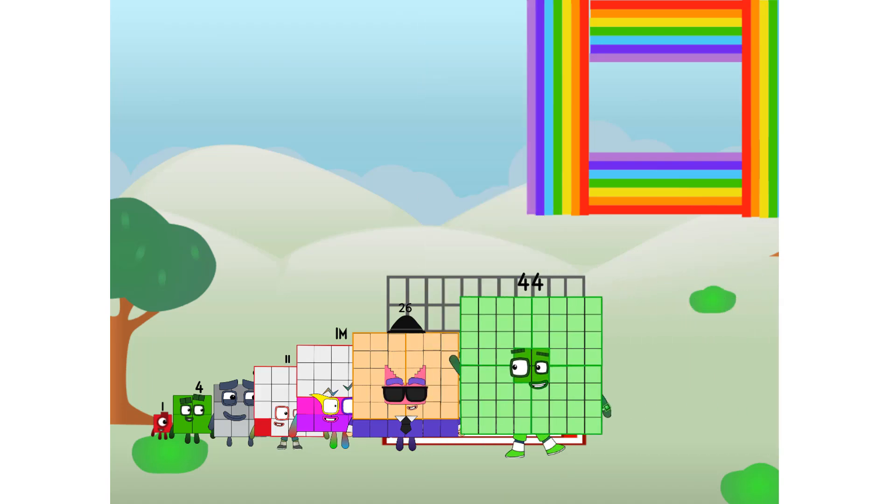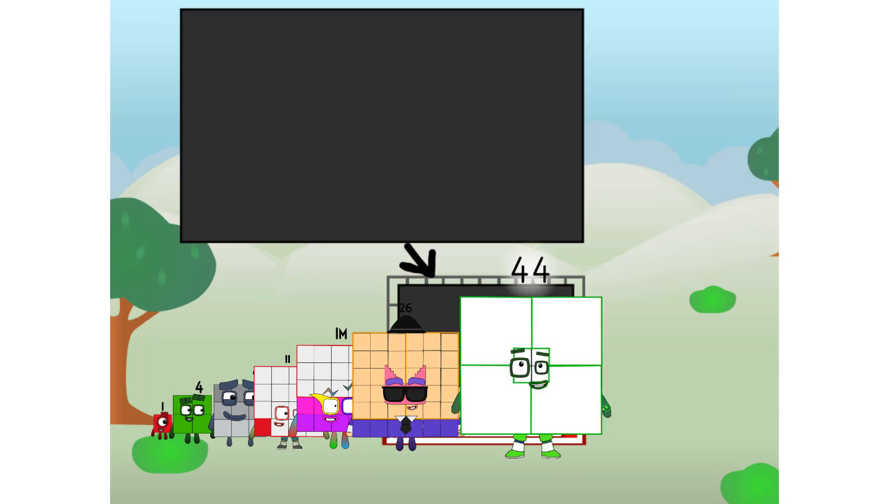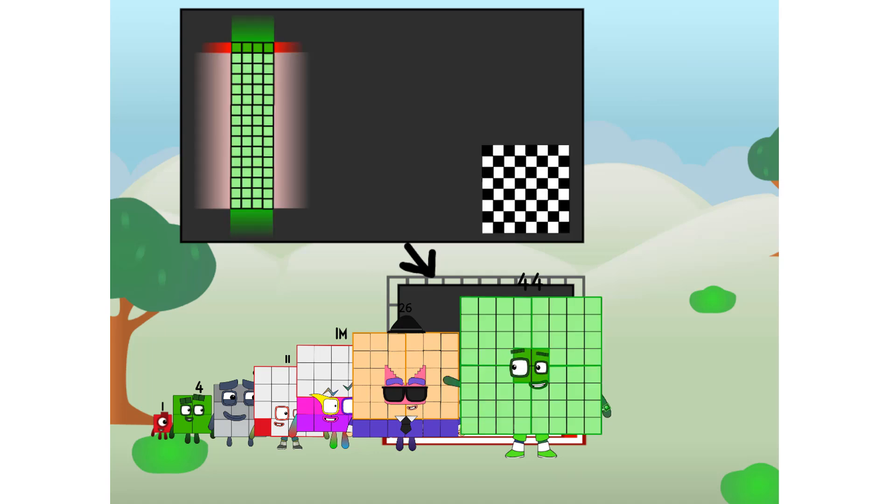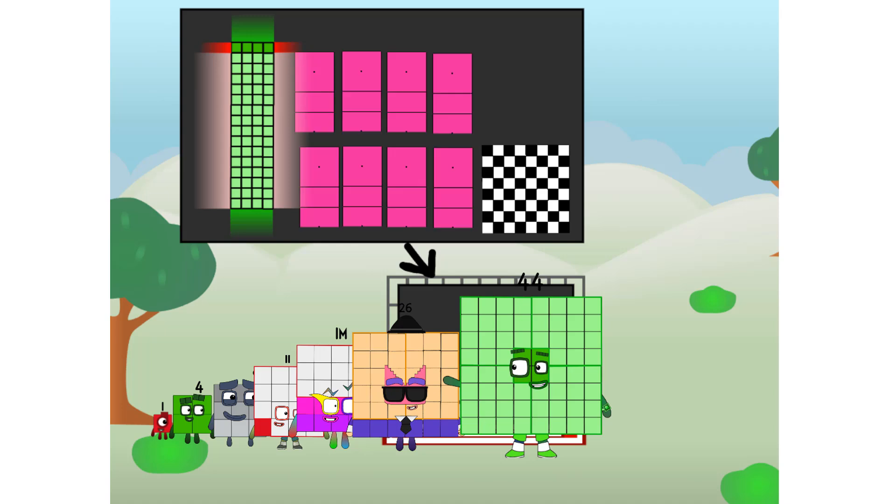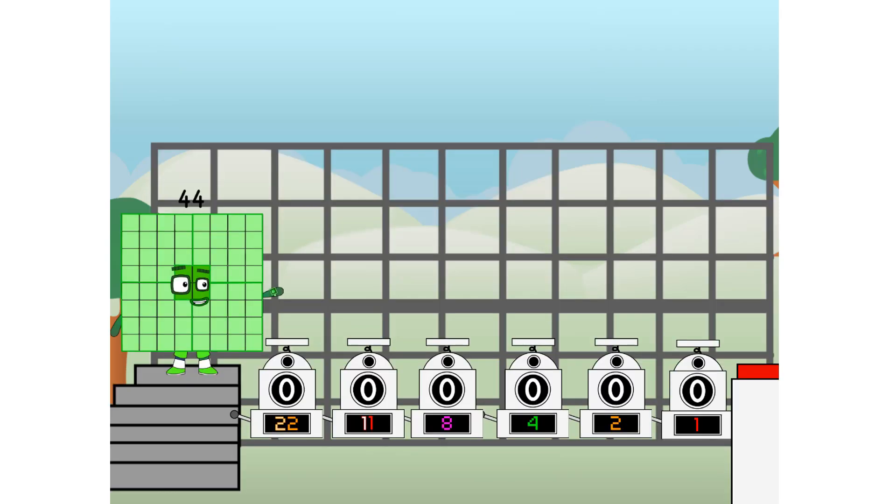I am 44. And I can be a strong square, a chessboard, a super rectangle, eight octoblocks, or even a super cube. But today, I want to show you a little trick I call binary boosters.